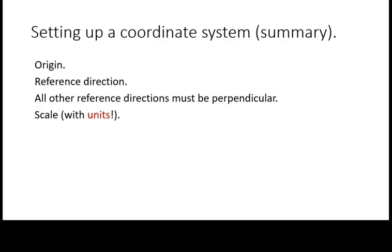In summary, to set up a coordinate system, you first need to establish your reference location, known as the origin, declare a reference direction, and if the problem involves more than one dimension, establish reference directions that are perpendicular to that, and finally, make sure the coordinate system declares a scale with units.